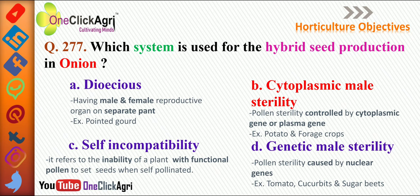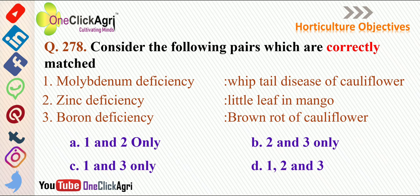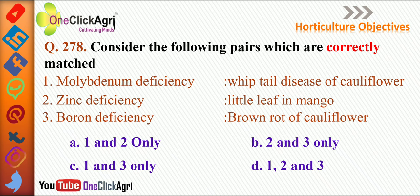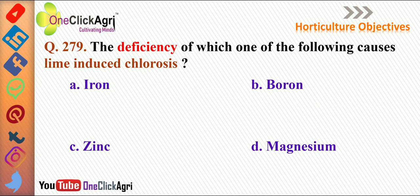Next question: Consider the following pairs — molybdenum deficiency causing whiptail disease of cauliflower (correct), zinc deficiency causing little leaf in mango (correct), boron deficiency causing brown rot of cauliflower (correct). The right answer is all three: one, two, and three. Next question: Deficiency of which element causes lime-induced chlorosis? The right answer is iron. The other options — boron, zinc, and magnesium — were discussed in previous lectures.